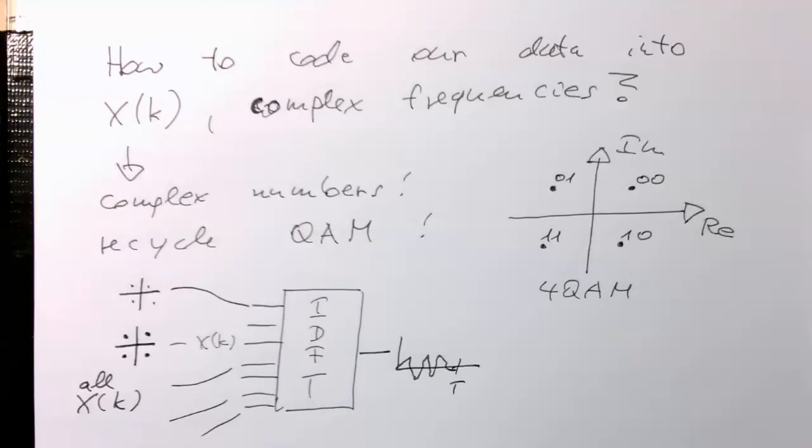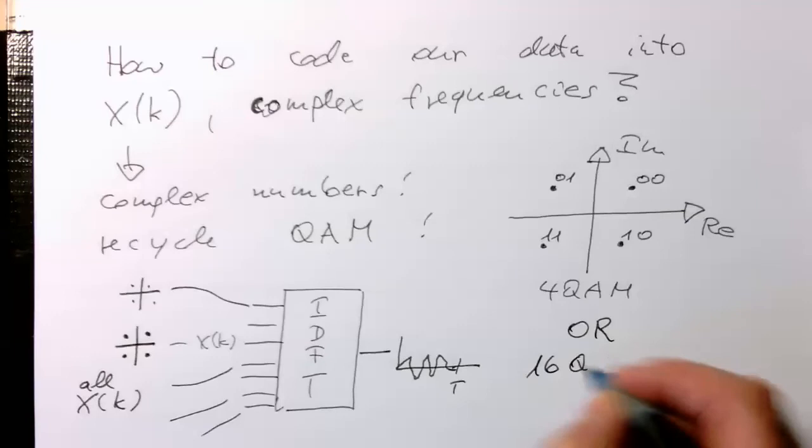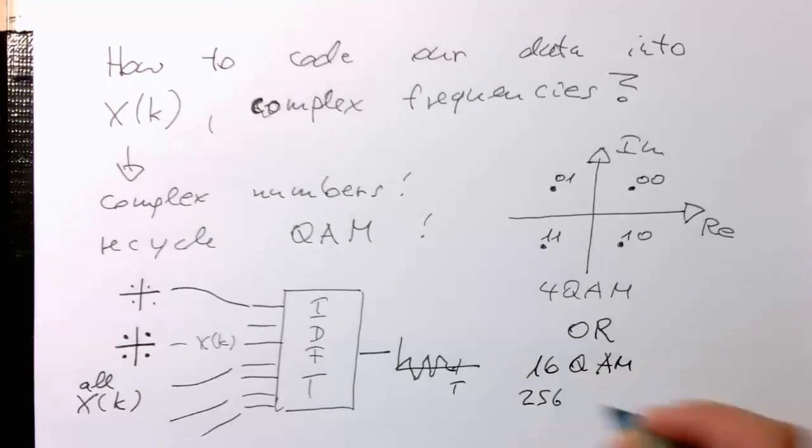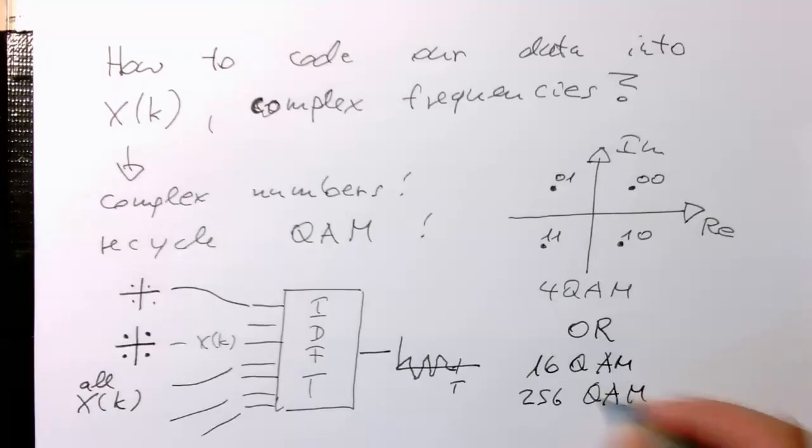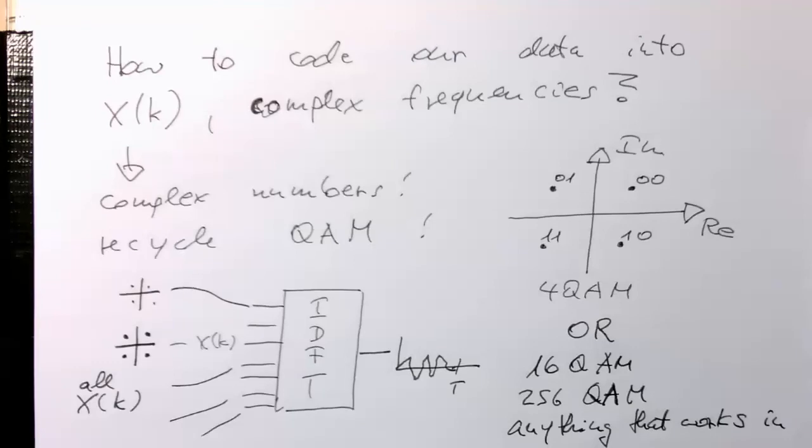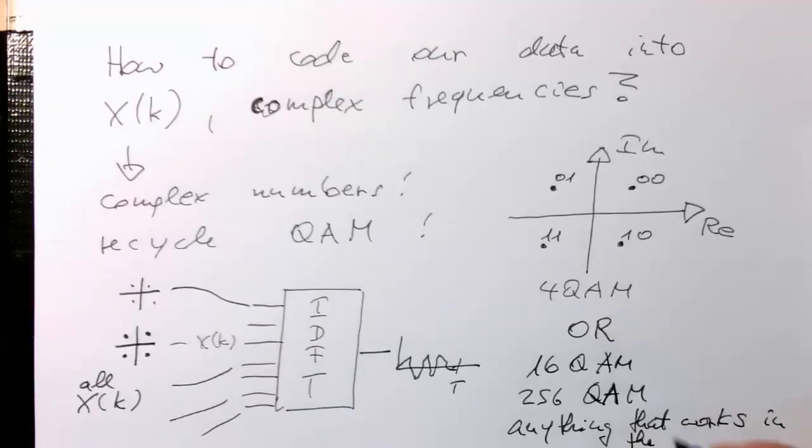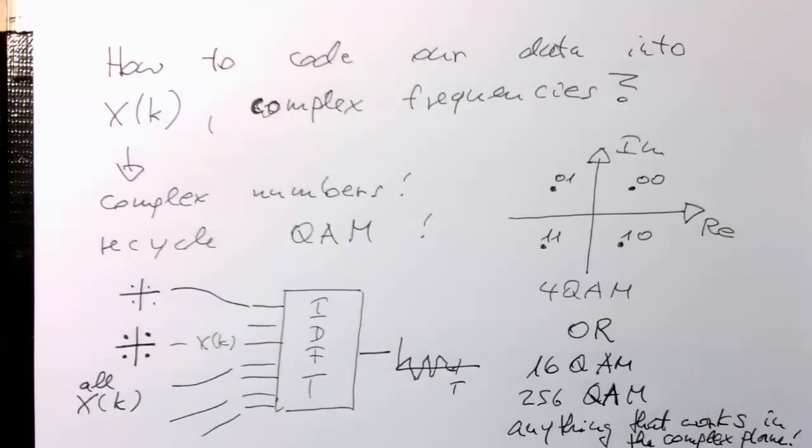That we just code our data as QAM. Or we use 16 QAM or 256 QAM. Or essentially any other modulation scheme which works in the complex plane. Anything that works in the complex plane. And that's a very simple concept. And we can recycle all the stuff what we've learned before.